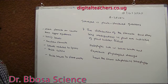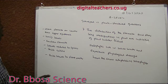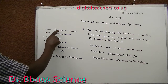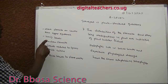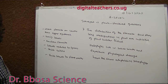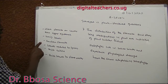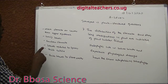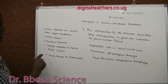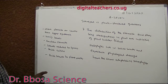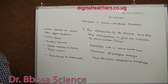Drought-adapted plants have the same adaptations as xerophytes: more stomata on the lower than upper epidermis, hairy leaves, sunken stomata, leaves reduced to spines, thick cuticle, fleshy leaves to store water.